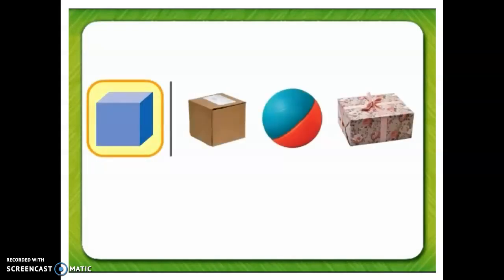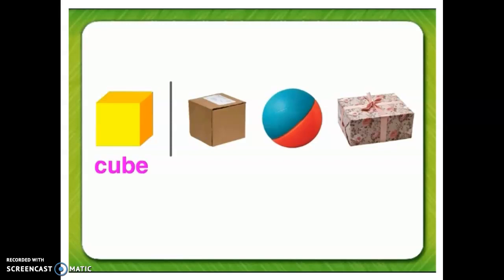Name the first shape in the row. This is a cube. Describe it. The sides of a cube are flat. The sides of a cube are the same size.